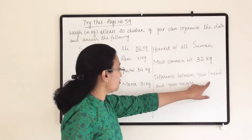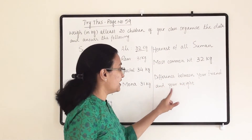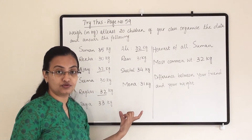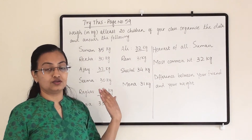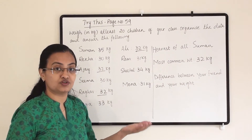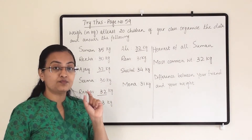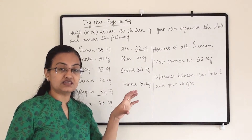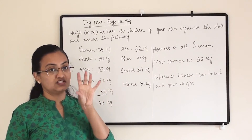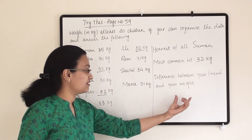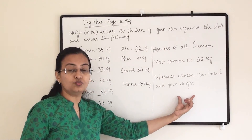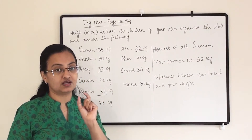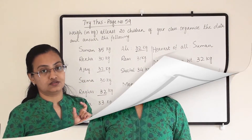The third question asks for the difference between your weight and your friend's weight. You can note down your own name and your best friend's name as observations, then subtract them — write the bigger number first and the smaller number later to get the difference between your weight and your best friend's weight.